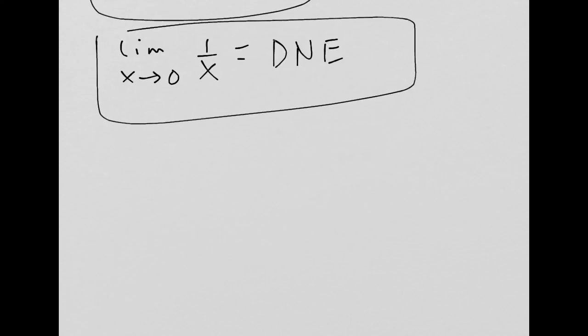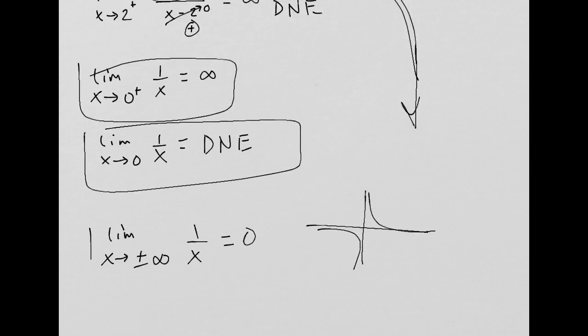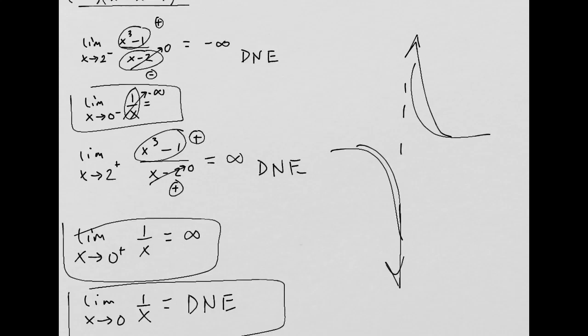And then, I suppose, limit as x approaches positive or negative infinity. We're not there yet, but I'm going to write it down anyway. If the bottom goes to infinity, the whole entire fraction goes to 0. And it doesn't actually matter which way you're going from. If you looked at the graph of 1 over x, it looks like this. If you're going way out to the right, your graph is approaching the x-axis, which is a y value of 0. Same thing happening on the other side. So, this one does exist, plus or minus.